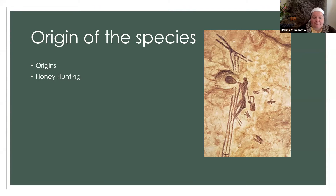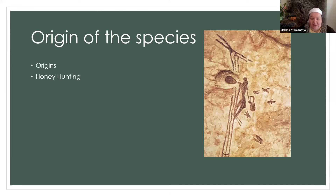Modern bees are kept mostly in apiaries. One of the interesting things about honeybees is that they can be found on every continent in the world except Antarctica. When honeybees came to the Americas, settlers brought them in 1622, but the West Coast — California and Washington — did not receive honeybees until the 1850s. The First Nations people of the Americas called them the 'white man's flies,' because the bees would travel ahead of European settlers, which was quite interesting.